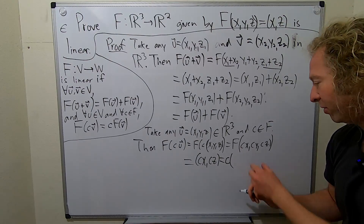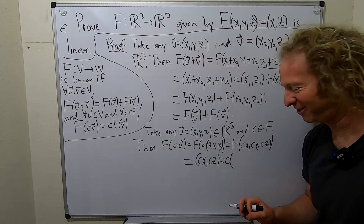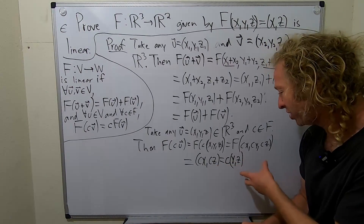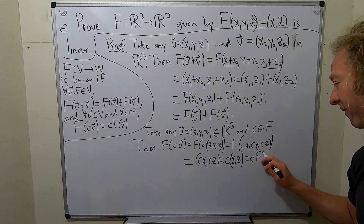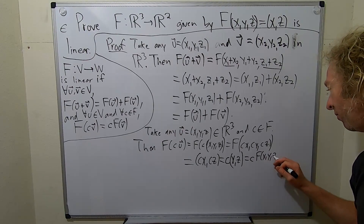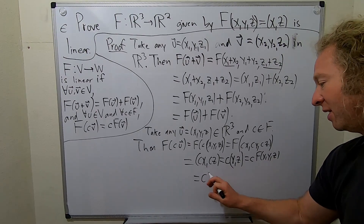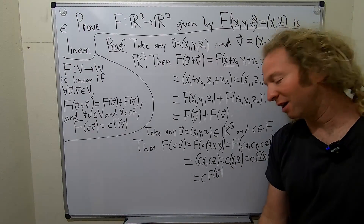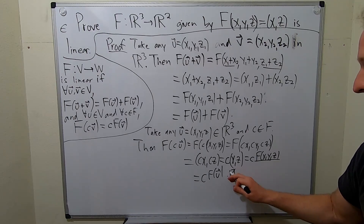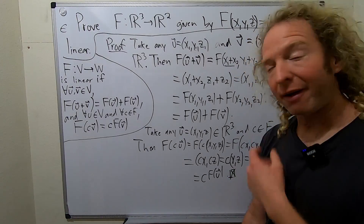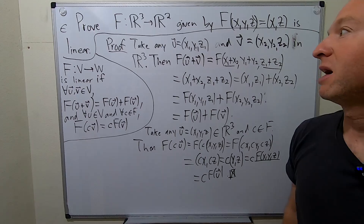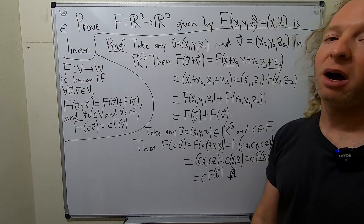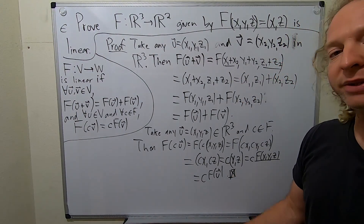Now you can pull the c out — scalar multiplication. So this is c times (x, z), and (x, z) is f of (x, y, z) by definition. And that's c times f of u — that's f of u. So that's it. That's how you prove it's a linear transformation. I like to put a little box with an X when I finish my proofs. Just some mathematics, some linear algebra — that's how you prove a function is a linear transformation. Take care.